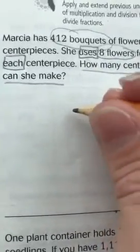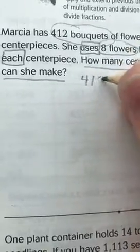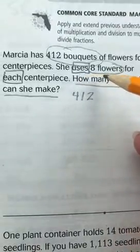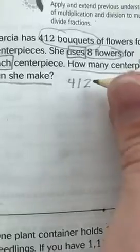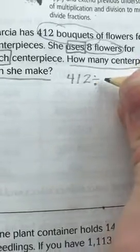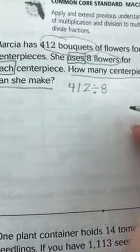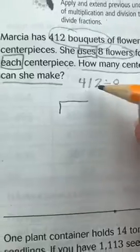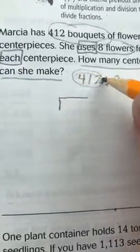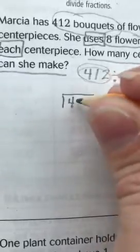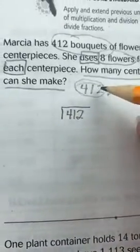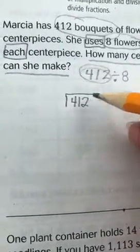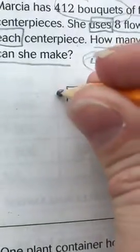The first thing is my dividend — what is being shared. What's being shared is 412 bouquets of flowers, and she uses eight flowers for each centerpiece, so it's 412 divided by eight. I'm going to rewrite it using a number house. The first number — the dividend — goes inside the number house. So 412 goes inside. We talked about running from a hurricane: the first one gets in the shelter and the other is stuck knocking outside the door.